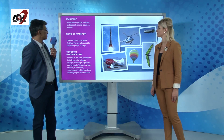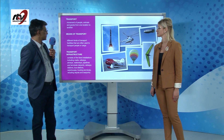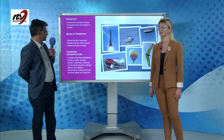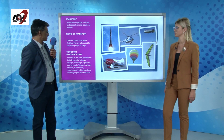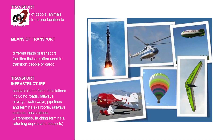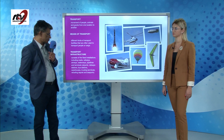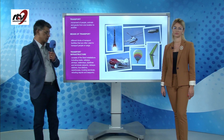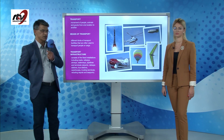Means of transport refers to the different kinds of transport facilities that are often used to transport people or cargo. Transport infrastructure consists of the fixed installations, including roads, railways, airways, waterways, pipelines and terminals — such as airports, railway stations, bus stations, warehouses, trucking terminals, refueling depots and seaports.